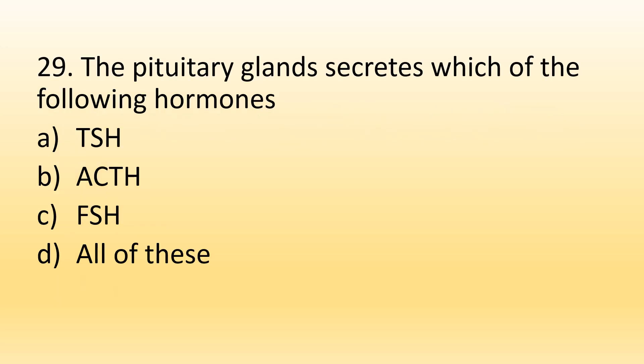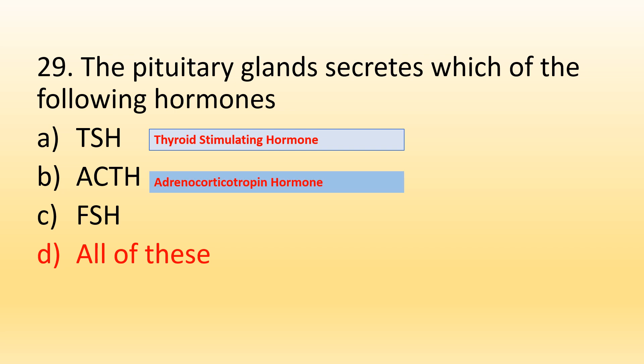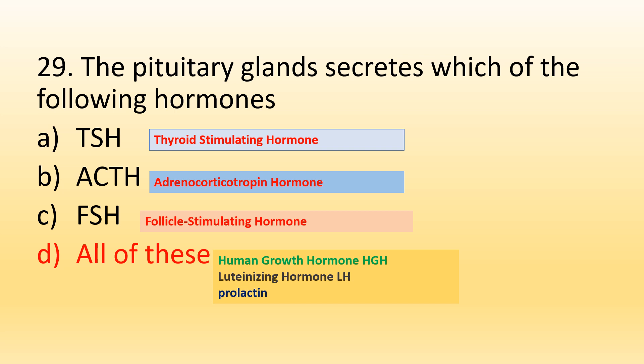Number 29. The pituitary gland secretes which of the following hormones? Option A, TSH; Option B, ACTH; Option C, FSH; Option D, All of these. The right option is Option D, All of these. TSH stands for Thyroid Stimulating Hormone, ACTH stands for Adrenocorticotropin Hormone, and FSH stands for Follicle Stimulating Hormone. The pituitary gland also secretes Human Growth Hormone, Luteinizing Hormone (LH), and Prolactin.